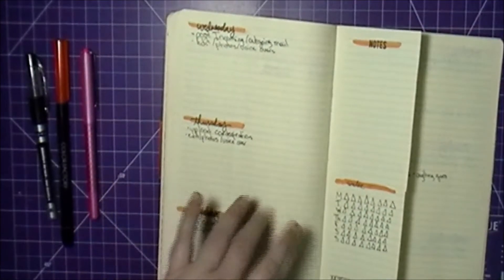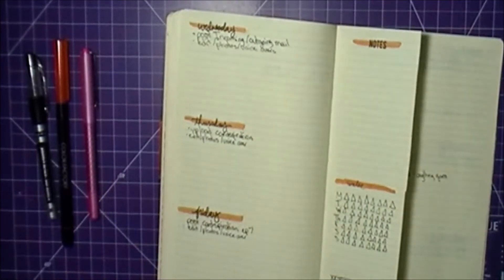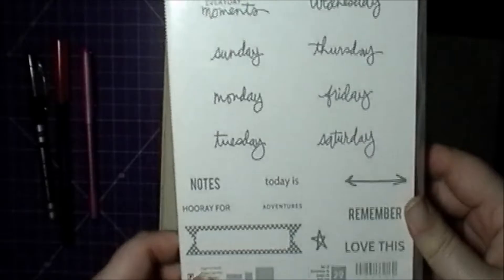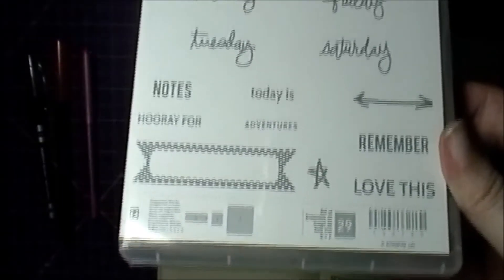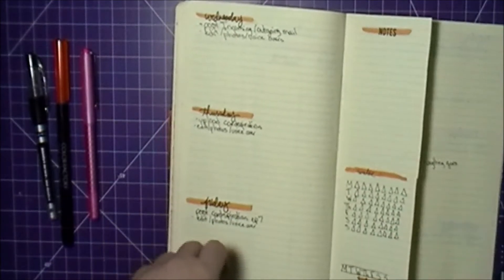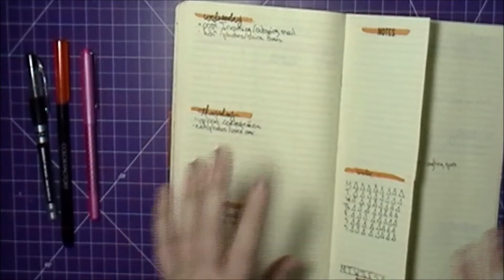Again, with a minimalist look. I used a stamp set for these days, which is Moments Like These by Stampin' Up. I used the days of the week and then notes. I started on a Wednesday because that's when March starts, that's the first day. Then I have notes here.